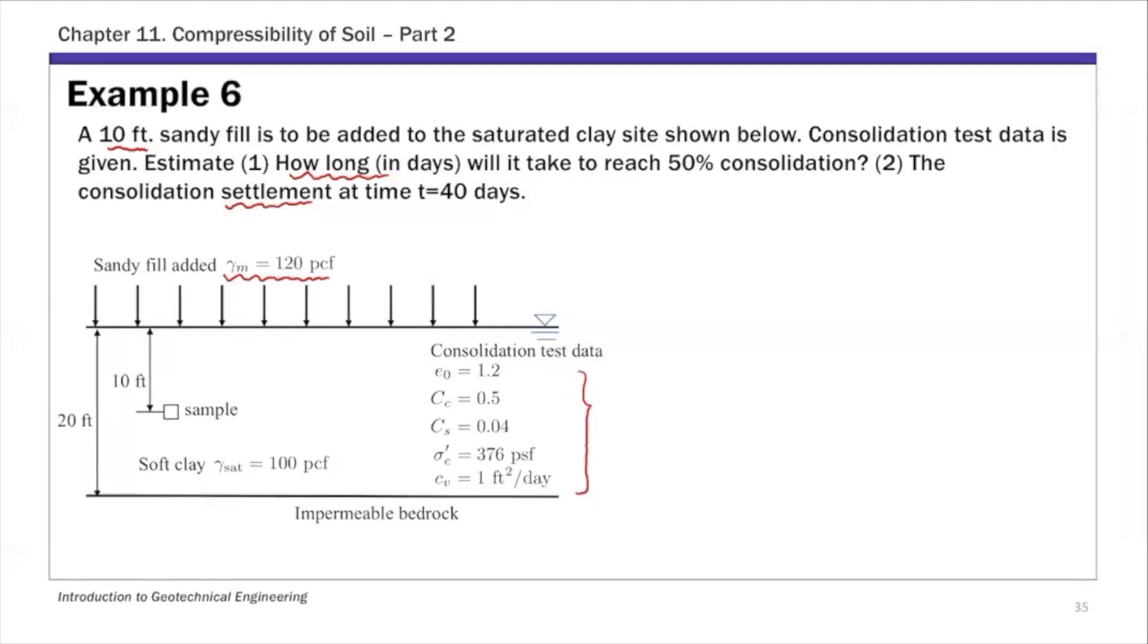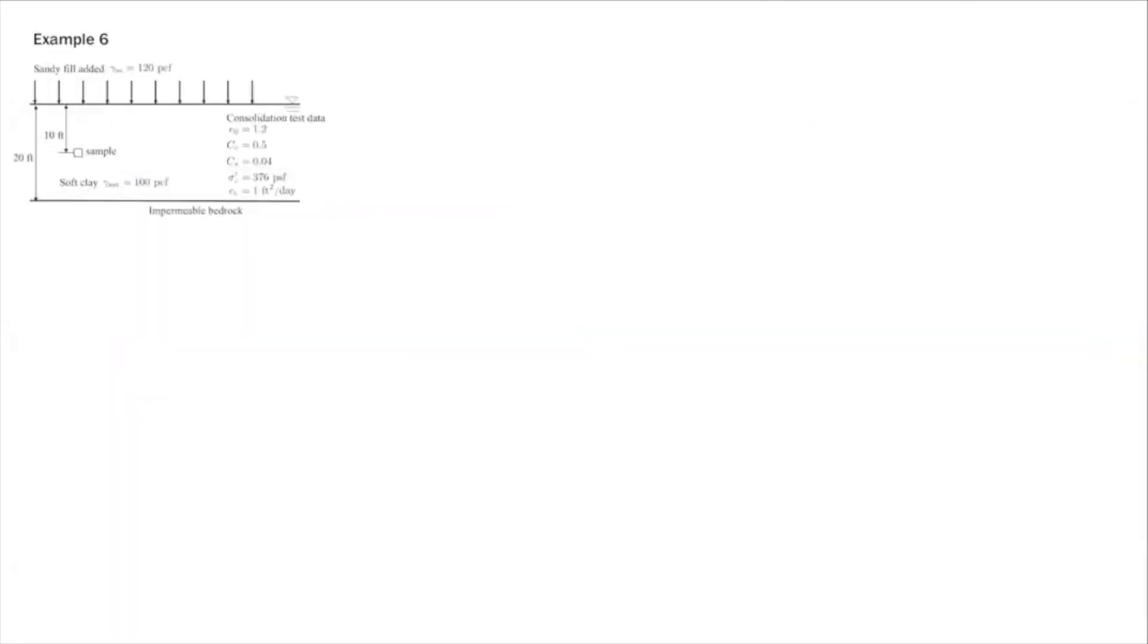So first, estimate small t. The first question asks for the time to reach 50% degree of consolidation. So basically, that's the small t. We're given capital U and we need to find small t. We're going to take the route U to Tv to t. From capital U, estimate Tv and estimate small t.